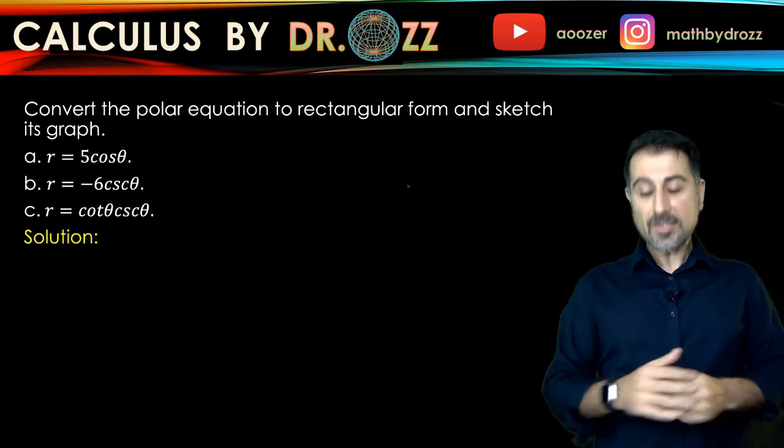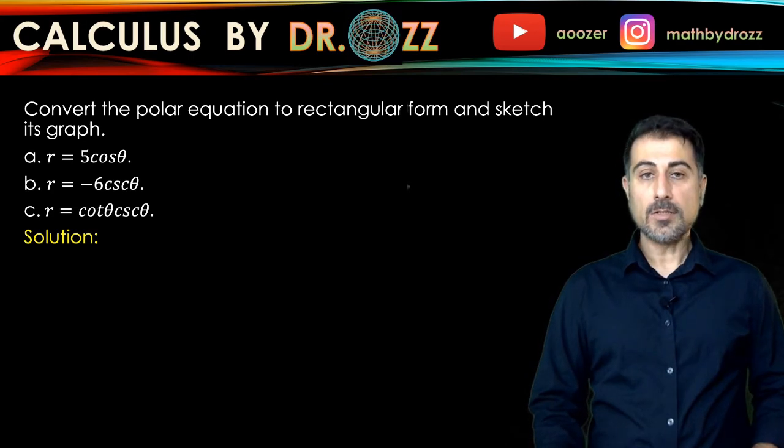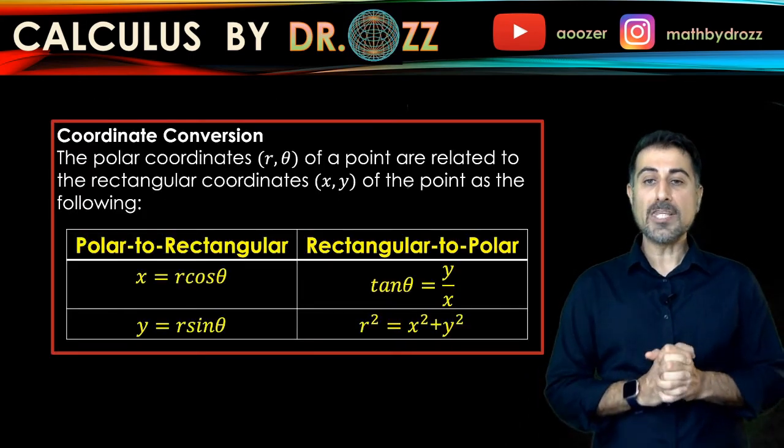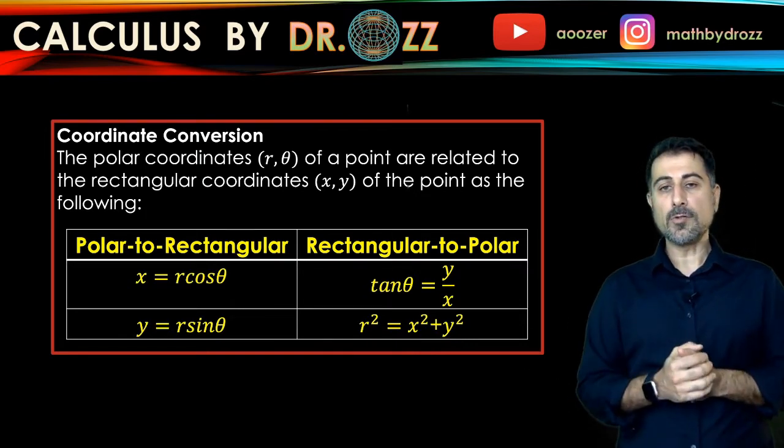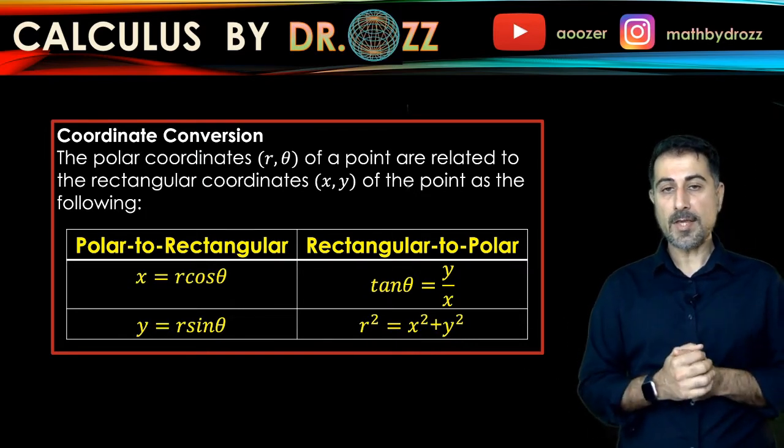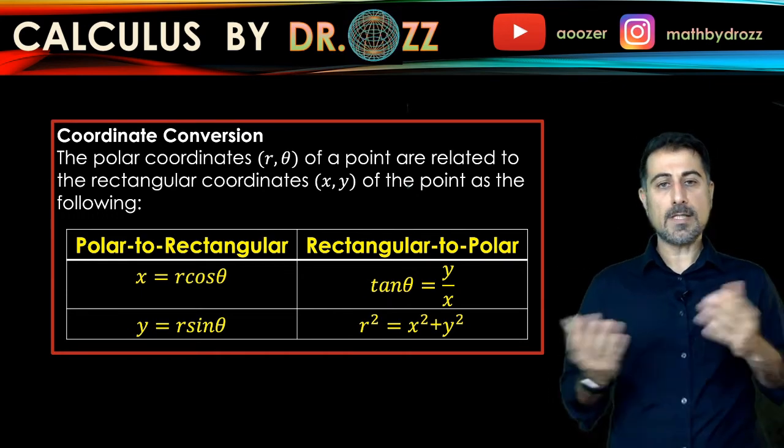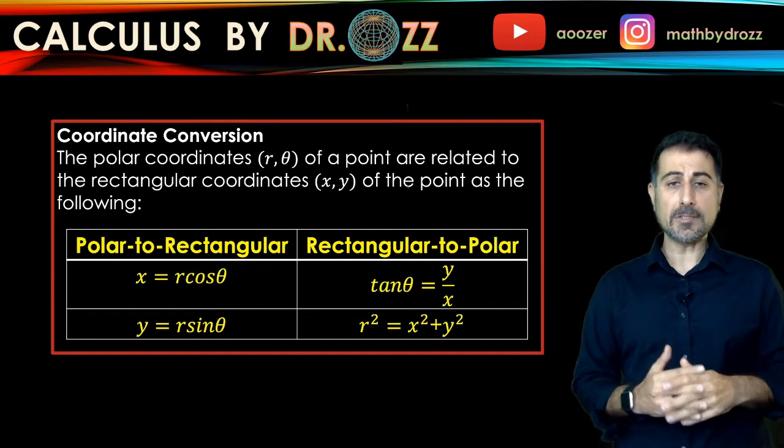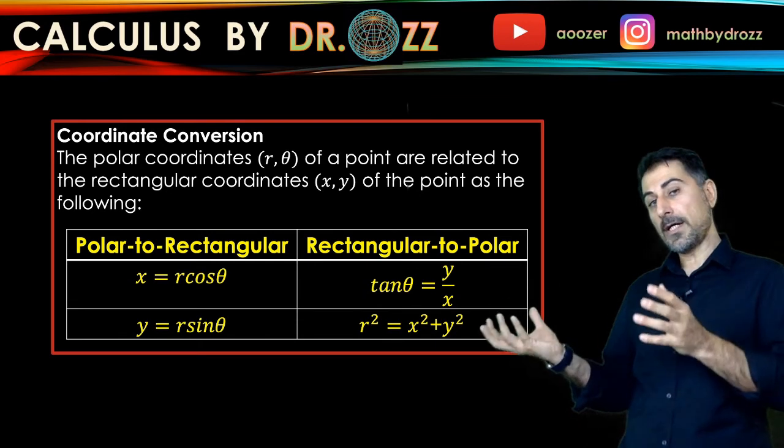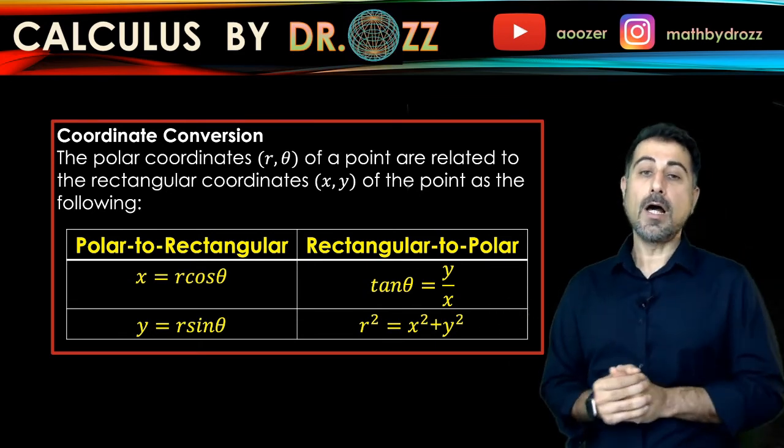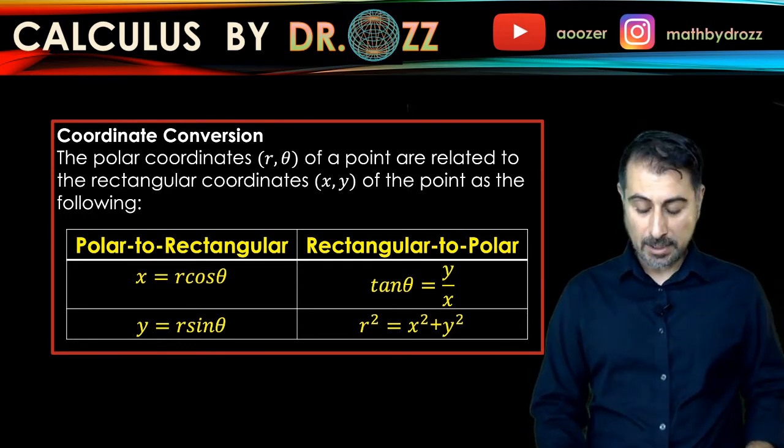So what we're going to do next is to convert each polar equation to the rectangular form by using this relationship here. So essentially x equals r cosine theta and y equals r sine theta is going to immensely help us. And time to time, you may also refer back to tan theta equals y over x or r squared equals x squared plus y squared. Think about all of those four equations to be used along the way, whichever one is more applicable.